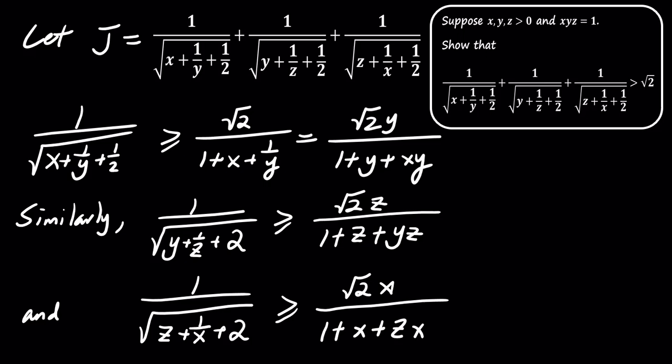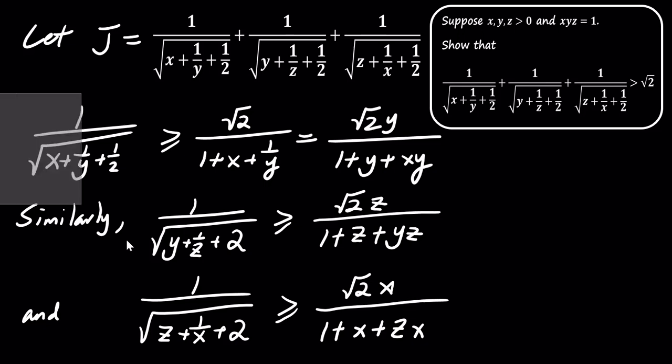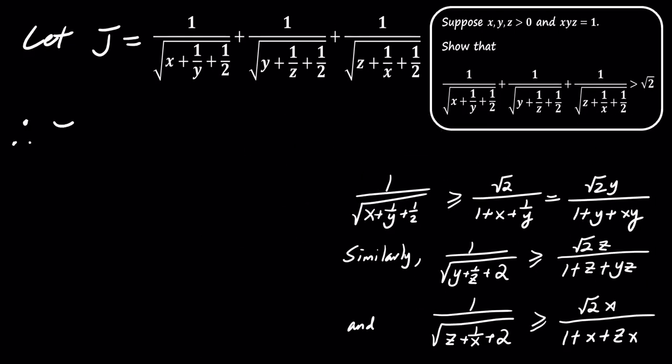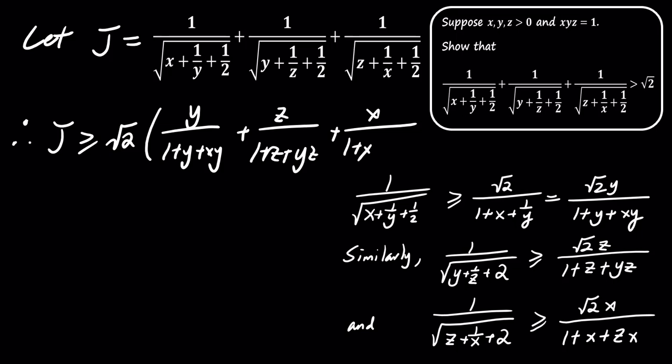Adding these inequalities together gives us the bound for j. Therefore, we find that j is greater than or equal to the square root of 2 times the sum of y over the quantity 1 plus y plus the product of x and y, plus z over the quantity 1 plus z plus the product of y and z, plus x over the quantity 1 plus x plus the product of z and x.